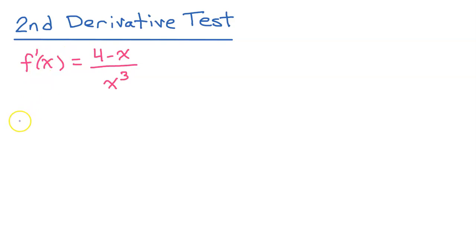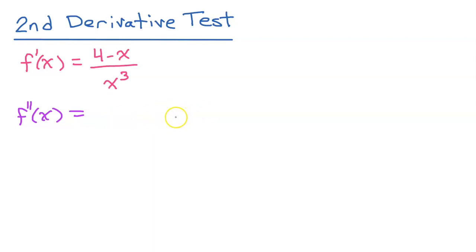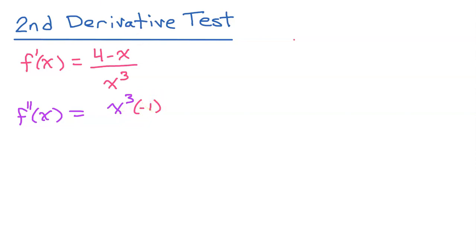For the second derivative test, you need to find the second derivative — the derivative of f prime. Since this is a quotient, I'll use the quotient rule: low d high, less high d low, draw the line and down below, the bottom squared will go. Low d high: start with the bottom, x to the third power, times the derivative of the numerator, which is negative one. So low d high is x to the third power times negative one.